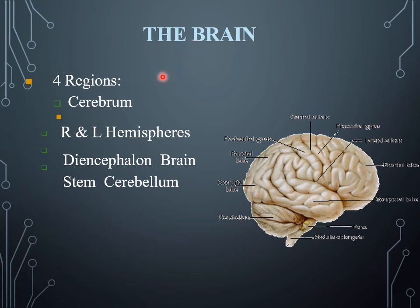The brain has four main regions. Now we are going to discuss the parts of the central nervous system. The brain consists of four different anatomical regions. Our focus will be on the structure and structural components. The four regions are the cerebrum, the right and left hemispheres, the diencephalon, and the brain stem.